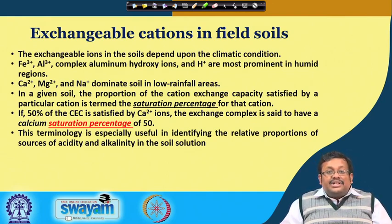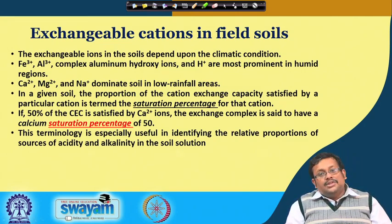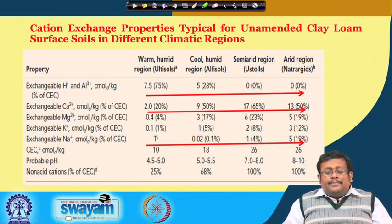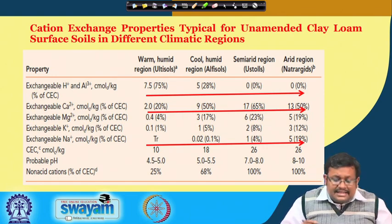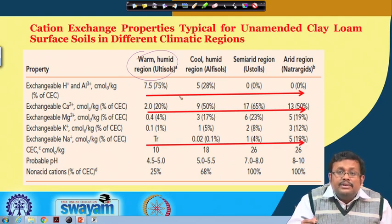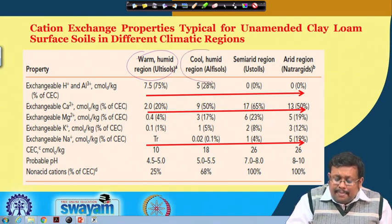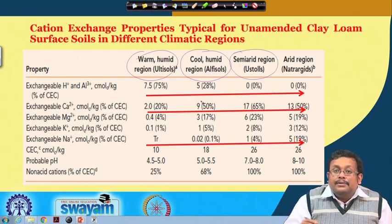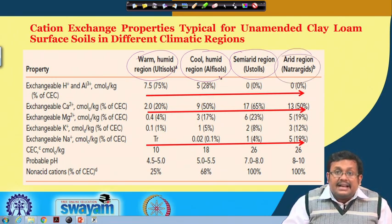This terminology is especially useful in identifying the relative proportion of sources of acidity and alkalinity in the soil solution. Cation exchange properties are typical for unamended clay loam surface soil in different climatic regions. Four different conditions are presented: warm and humid region represented by Ultisols (highly weathered soils), cool and humid region represented by Alfisols, semi-arid region represented by Ustolls, and arid region represented by Natrargrids.